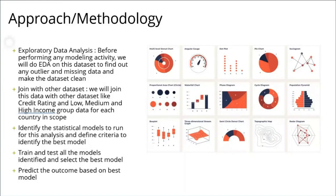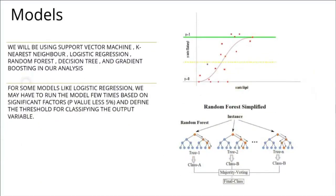After that, we're going to identify a statistical model to run for our problem and find the best model based on the metrics we define. We'll train and test all models. Because this is a classification problem, we're going to run SVM, K-Nearest Neighbor, Logistic Regression, Random Forest, Decision Tree, and Gradient Boosting in our analysis.